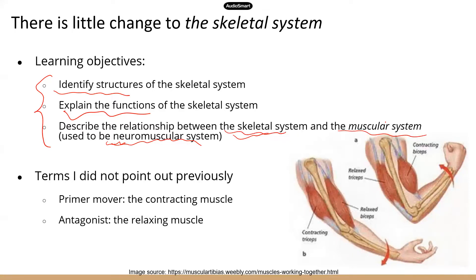Terms I did not point out previously - these are not new terms, they were in TEAS 6, but I realized I never mentioned these two terms in my previous skeletal system review lesson. So I listed them here just in case you see any questions in TEAS 7. So a lot of times the muscles work together, they work in tandem. There will be a prime mover. That's the contracting muscle that generates force to move certain bones. And the opposite, the other muscle of the pair will be an antagonist. That's the relaxing muscle. So it's almost like they're doing the opposite.